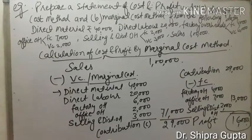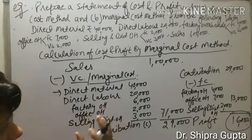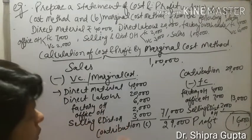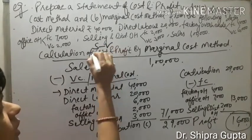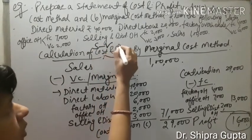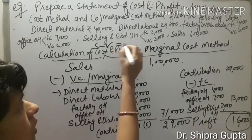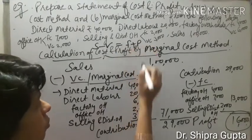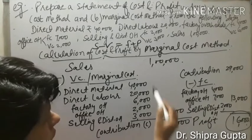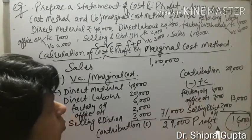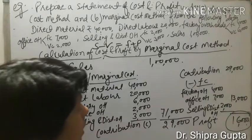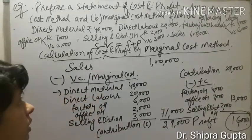Now in this method we can easily understand how we calculate profit by absorption costing and by marginal costing. In short, the formula is: S minus V equals F plus P, which means sales minus variable cost equals fixed cost plus profit. If you have faced any problem, you can ask me in the comments. Thank you.